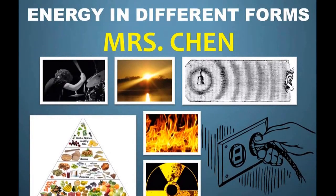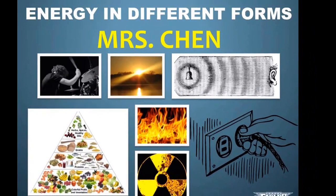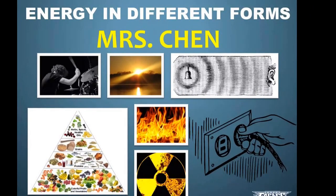Since energy is measured in joules, you might think all energy is the same since it's all measured in the same unit. But in reality, there are many different forms of energy. There are actually seven different forms, and they can all be remembered easily by the acronym Mrs. Chen.